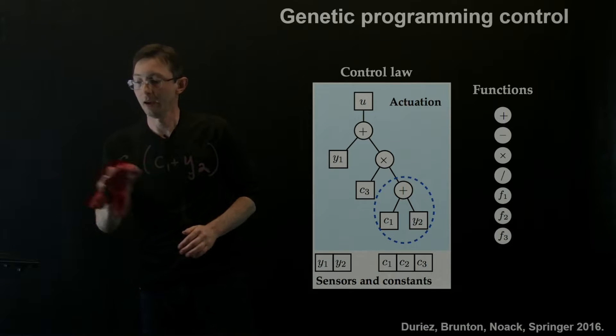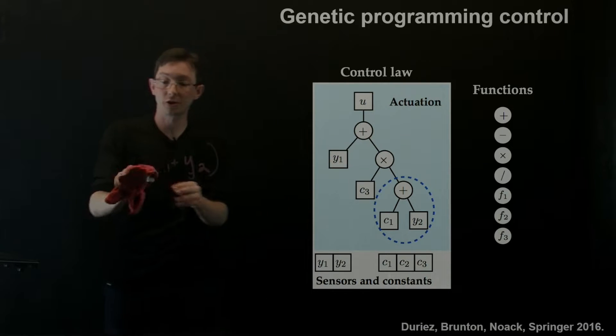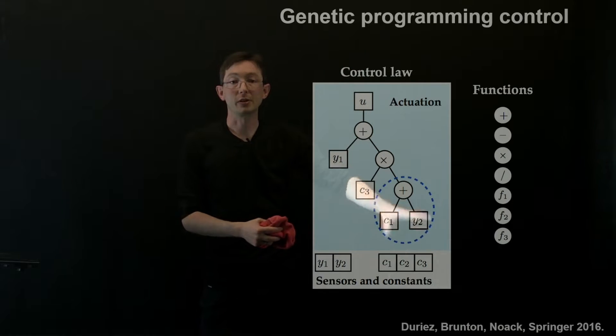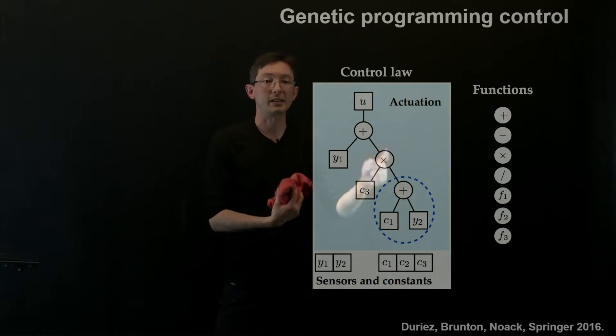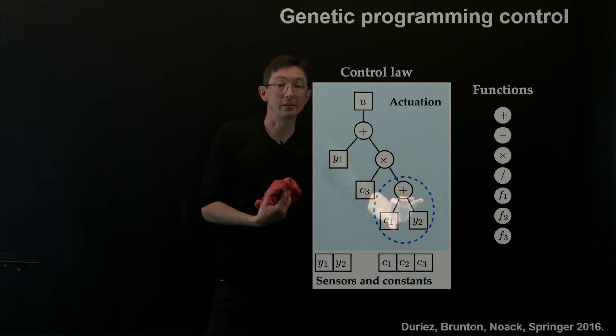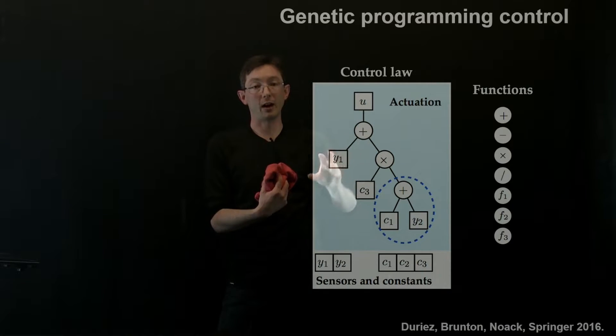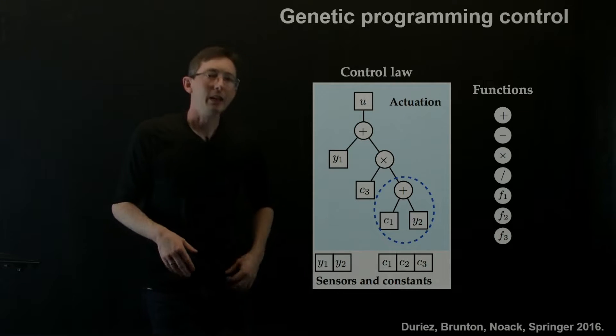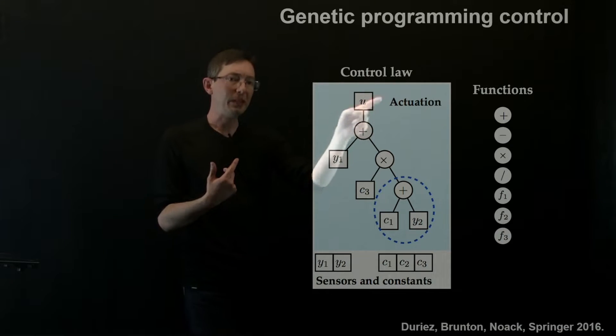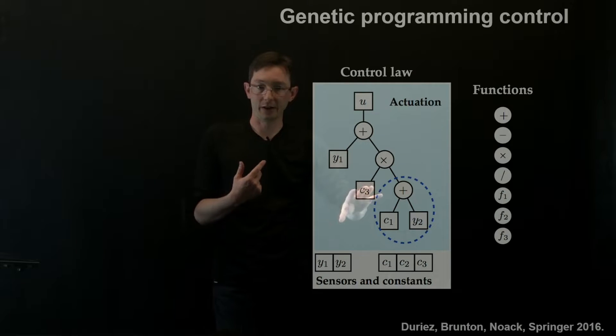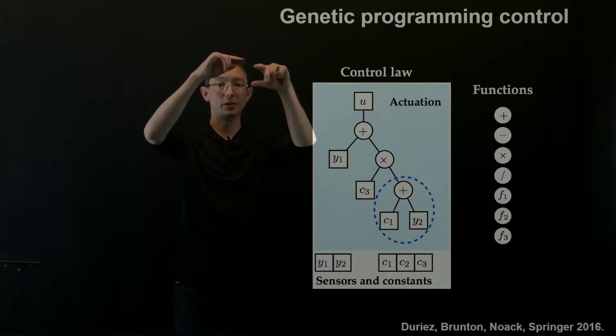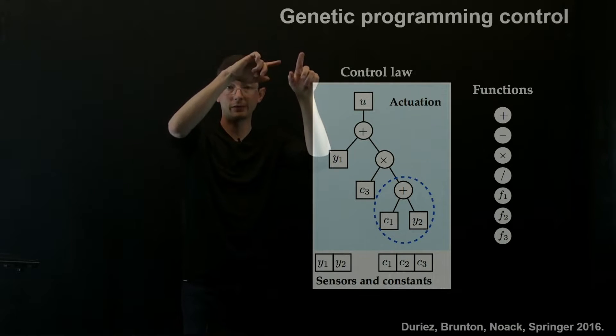And it's very flexible. So this function tree, this recursive tree composition of functions is extremely flexible to take your sensor measurements and determine what combination of those gives me a good actuation strategy. Now, interestingly, people have also used this strategy to not just to design a control law, but also for system identification.